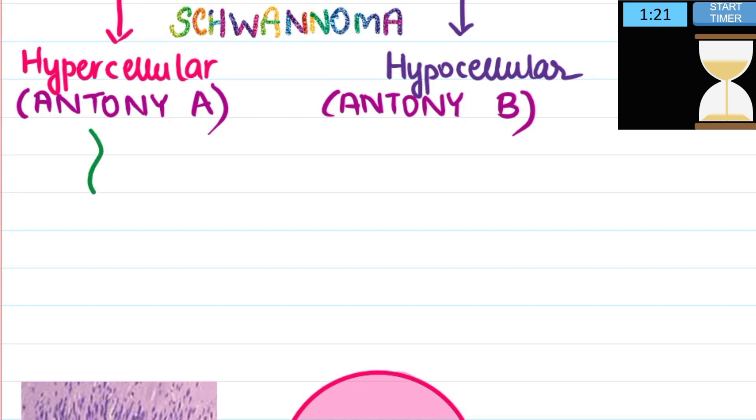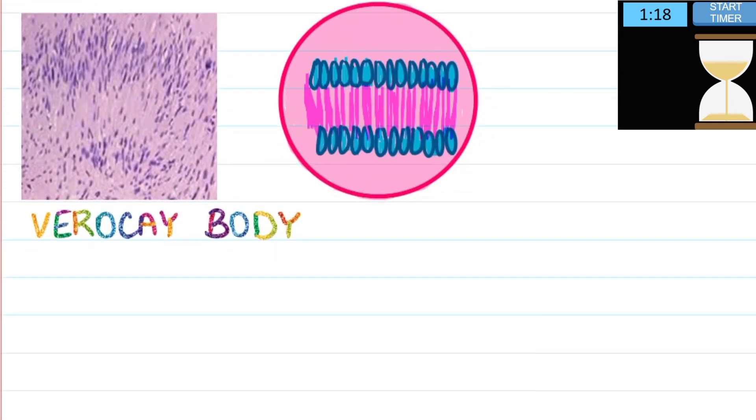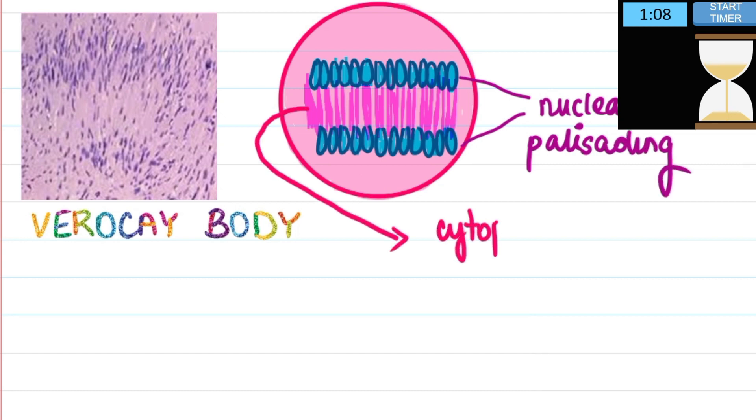What is this Verocay body? So let's see a better image. In the Verocay body you see that we have two rows of nuclei which are showing palisading. They are parallel to each other, nuclear palisading. In between them are present all the cytoplasmic processes. So this is a Verocay body.